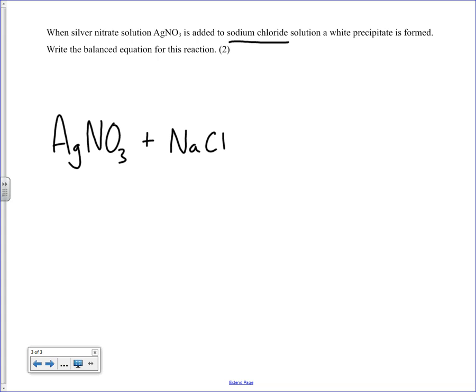Sodium forms one bond, because it's got one extra electron in its outer shell, and chlorine has one hole in its outer shell. Therefore, the two go together, they make a one-on-one bond.